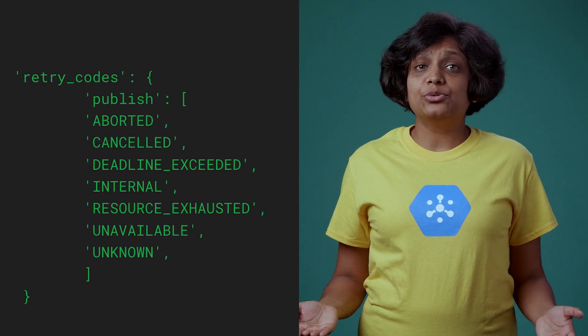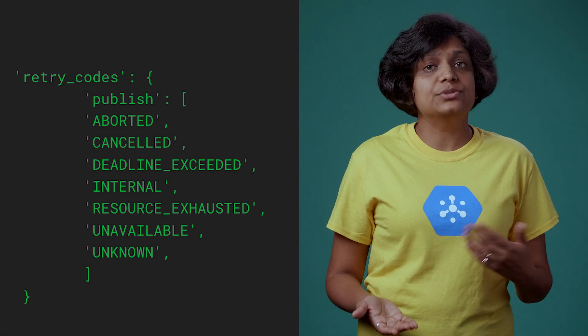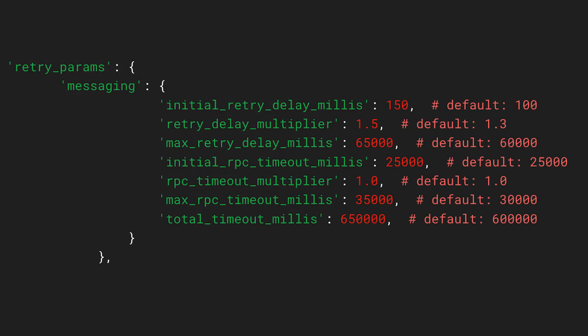What happens if publishing fails? Publishing failures are automatically retried in some client libraries. Check out the link to documentation to check the support for the language of your choice. Because we are dealing with requests over a network, request failure is a normal part of life, and understanding retries is essential. Client libraries support custom retry settings. Here's a snippet with retry error codes received from the publisher, and retry parameters that include timeouts and delays with the default settings.